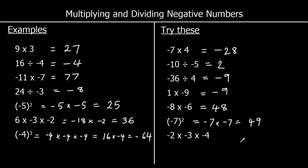Question 5: a negative times a negative is positive, and 8 times 6 is 48. Question 6: negative 7 squared means negative 7 times negative 7 — a negative times a negative is positive — and 7 times 7 is 49. Finally, step by step: a negative times a negative is positive, 2 times 3 is 6, so 6 times negative 4 — a positive times a negative is negative — and 6 times 4 is 24, so negative 24.